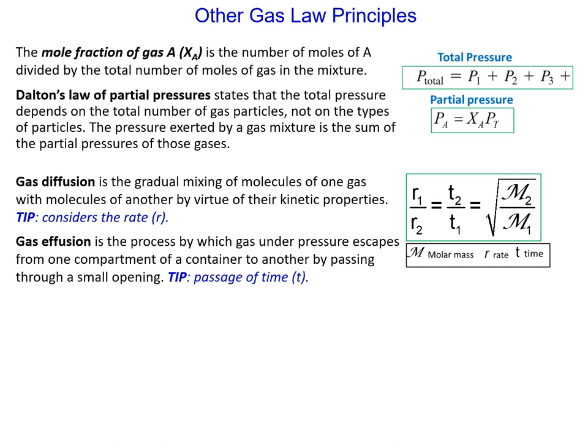The pressure exerted by a gas mixture is the sum of the partial pressures. To find the individual partial pressures, we would take the mole fraction expressed as a decimal times the total pressure, and we would get the partial pressure of the individuals.